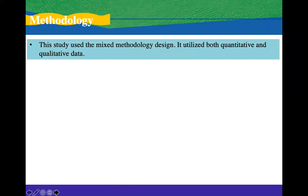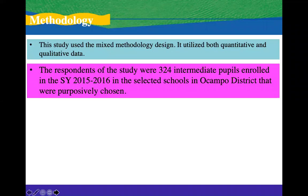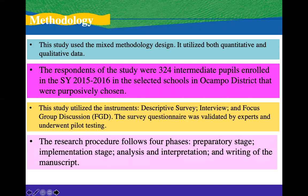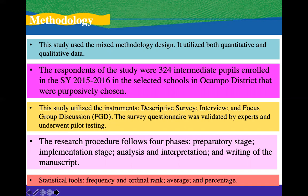This study used the mixed methodology design, utilizing both quantitative and qualitative data. The respondents were 324 intermediate pupils enrolled in school year 2015 to 2016 in the selected schools in Ocampo District, who were purposively chosen. The study utilized descriptive survey, interview, and focused group discussion. The survey questionnaire was validated by experts and underwent pilot testing. The research procedure follows four phases: preparatory stage, implementation stage, analysis and interpretation, and writing of the manuscript. Statistical tools used include frequency and ordinal rank, average, and percentage.